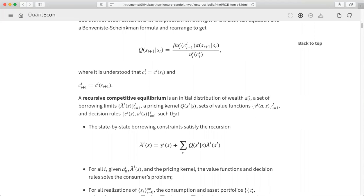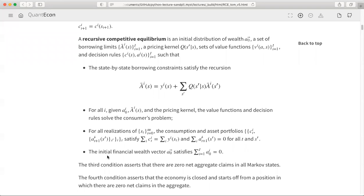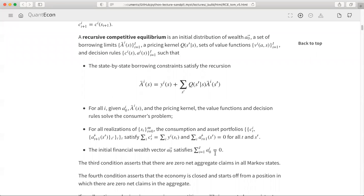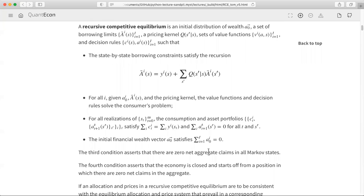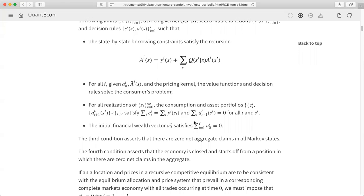I want to revisit and add one thing that I should have put in the definition of recursive competitive equilibrium. It's this fourth condition. I want the initial financial wealth vector to satisfy this: I want the economy to start off with zero net aggregate claims. That's what I want, and that's going to be important. That's what I've added to what we had in previous lectures.